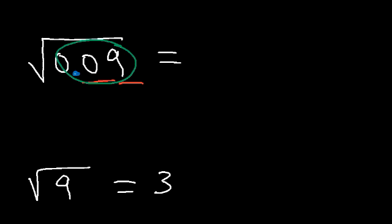If you have four digits, it's going to go down to 2. If you have six digits, it's going to be half of that, which is 3. And eight digits, it's going to turn into 4. So since we have two digits, we're going to have a decimal point and one number after the decimal point. So the square root of 9 is 3, and this is going to be 0.3. You can type this in your calculator — this technique works.